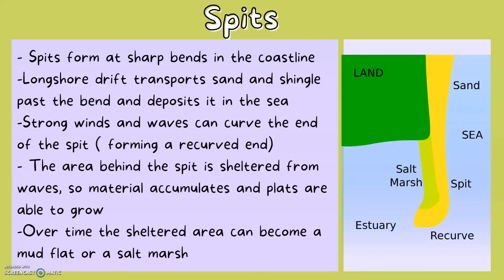Spits form at sharp bends in the coastline. Longshore drift transports sand and shingle past the bend and deposits it in the sea. Strong winds and waves can curve the end of the spit, forming a recurved end.